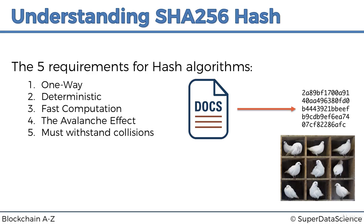This is explained by the pigeonhole principle: if you have 10 pigeons and only 9 holes, you must put two pigeons into one hole. When moving from a much larger set of documents to a smaller set of hashes, collisions are mathematically inevitable. However, natural collisions are so unlikely that we can tolerate them — just like we tolerate the rare case of two humans sharing a fingerprint.